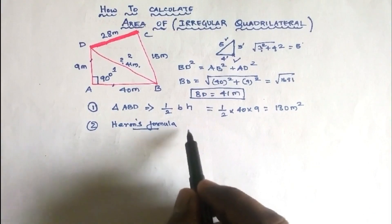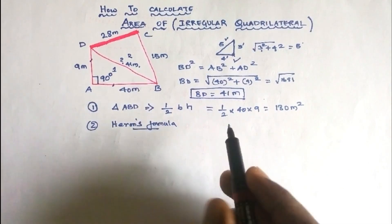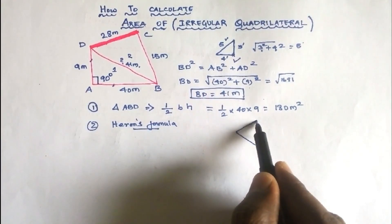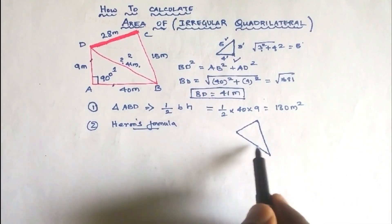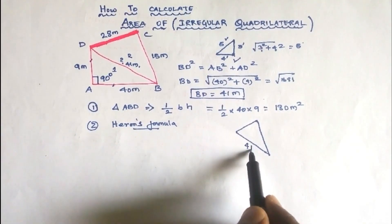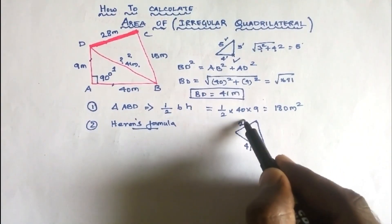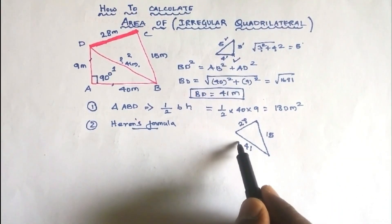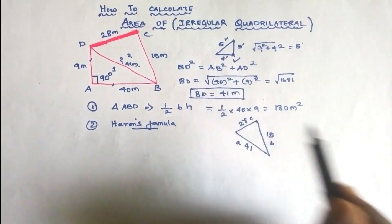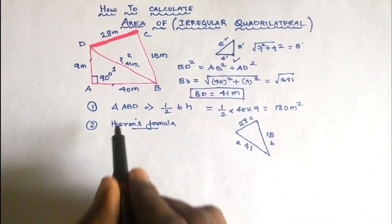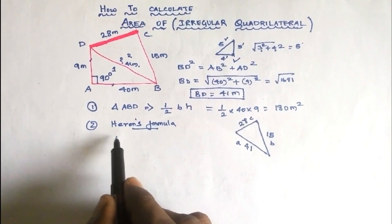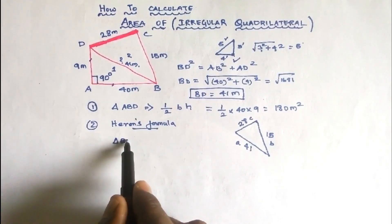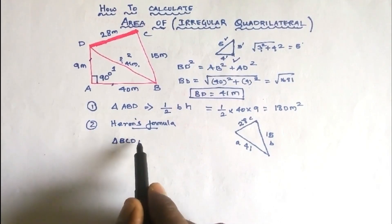Now we are going to calculate the second area. We are going to use the right angle to the other side, and the distance is 28 and this side is 15. So the points are A, B, C. We can use a formula we already know. The remaining portion — triangle BCD — we have to calculate using Heron's formula.